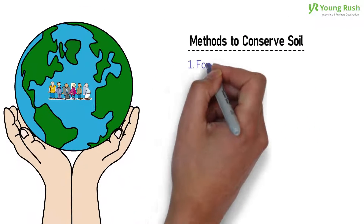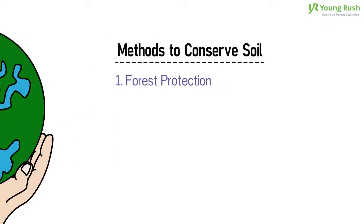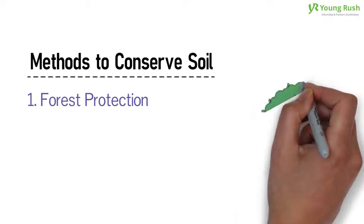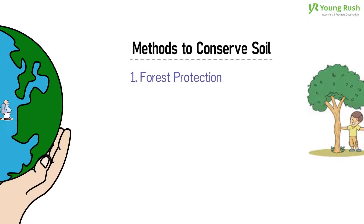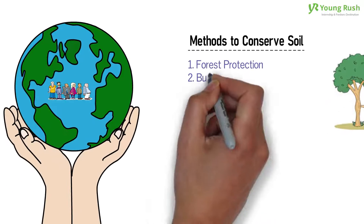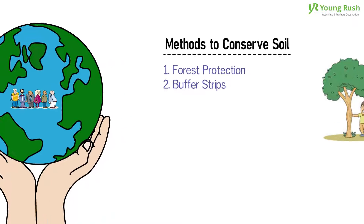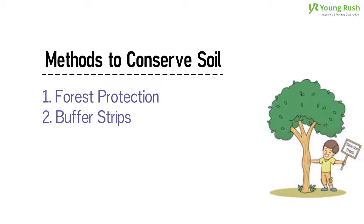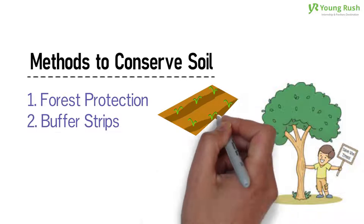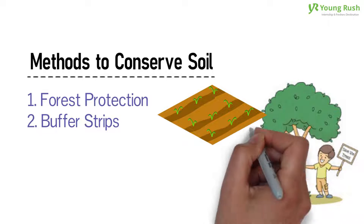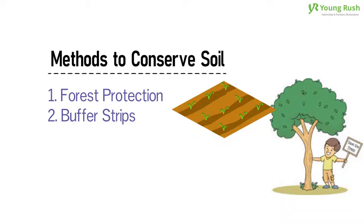1. Forest Protection. Commercial activities should be decreased to protect the natural forest cover. 2. Buffer Strips. Buffer strips provide protection where stream banks exist. They can be created with grass, trees, and shrubs.